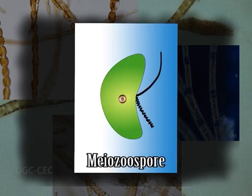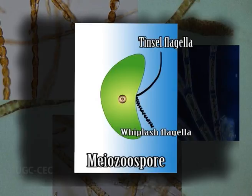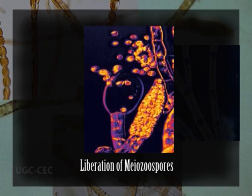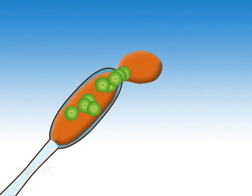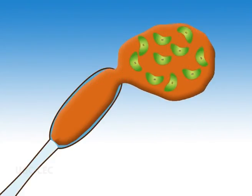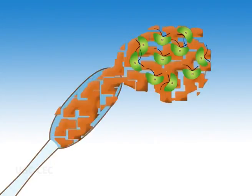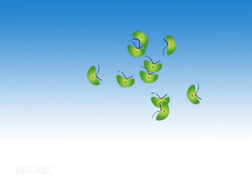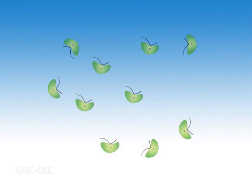Each unit then metamorphoses into a pyriform biflagellate haploid swarmer called a meiospore. The flagella are unequal and are inserted laterally, with the posterior flagellum shorter and whiplash type, while the anterior one is larger and tinsel type. During the liberation of the meiospores, the apex of the sporangium wall gets dissolved and the spores are liberated in a gelatinous mass. After 50 to 60 seconds, they get free from this mass and swim freely in water, remaining motile for about 30 minutes or so.